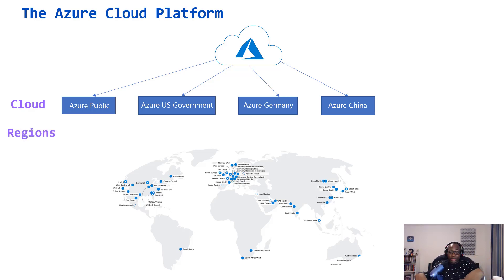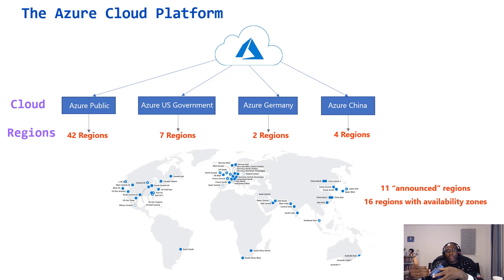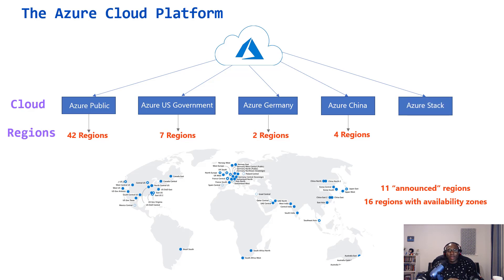Out of all these regions, there's something called availability zones — the ability to decide which data center your resources live in. Only 16 regions in Azure support availability zones. There's also Azure Stack, which allows you to host your own Azure environment in a hyper-converged infrastructure. It has the same API and runs the same software as the Azure platform.